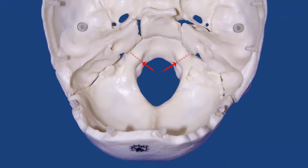The nerve is called the hypoglossal nerve, cranial nerve number 12, and you can see here that it's going to travel some distance through the wall on its way to the tongue, innervating the tongue. So that's the hypoglossal canal.